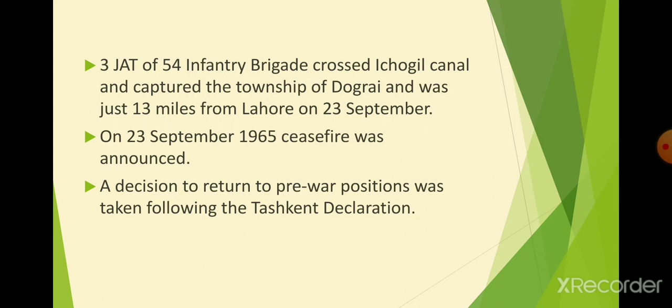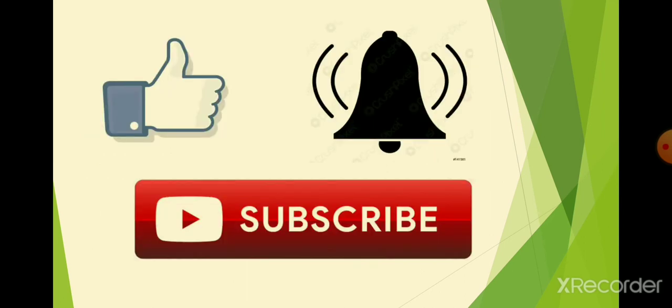Then on 23rd September 1965, a ceasefire was announced between the two countries. After that, a declaration was made which is called the Tashkent Declaration. Tashkent was in the USSR, which is now Uzbekistan, because after the USSR was divided, it split into Russia and other countries, and Tashkent now belongs to Uzbekistan.